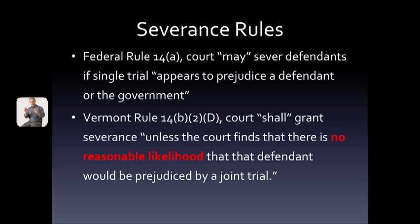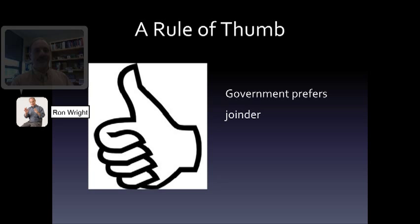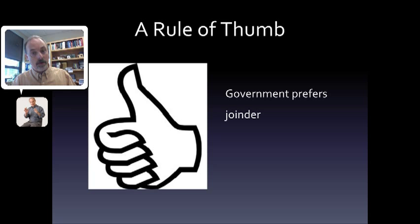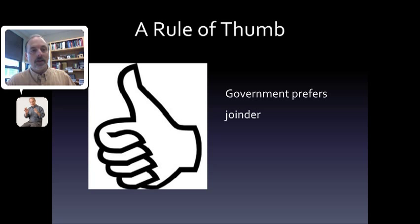As a rule of thumb, the government prefers joint trials — both for joinder of offenses and joinder of defendants — while the defense generally prefers separate trials. From the government's point of view, separate trials require more prosecutors, more judge time and court time, and a more difficult experience for witnesses and victims. If the same witness is needed to prove the case against two different defendants, you want to avoid requiring them to come into the courthouse and testify multiple times.